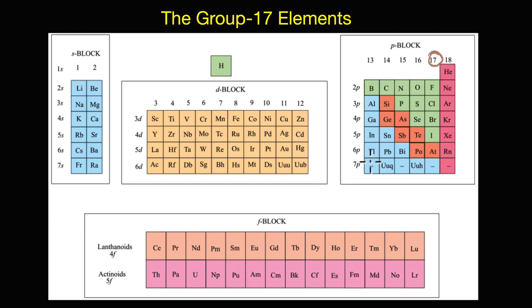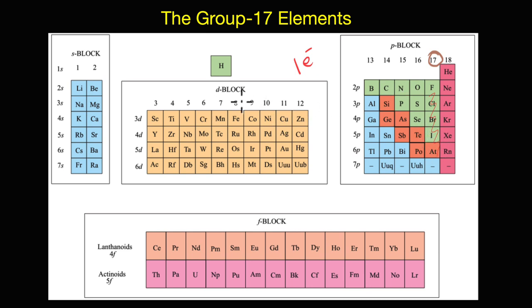Let's now talk about the Group 17 elements - the hyper-reactive, supercharged halogens. As you can see, we are almost at the end of the periodic table, which means we are looking at elements that have the smallest size and highest electronegativity in their respective periods, as they are just one electron short of the stable octet configuration. All of these halogens are extremely reactive - they react with metals and non-metals to form an entire class of compounds called halides. However, within this group, reactivity decreases as we go down the group from fluorine to iodine. We won't discuss astatine because it is an unstable radioactive element and almost all of its isotopes are very short-lived.